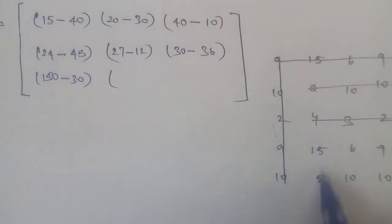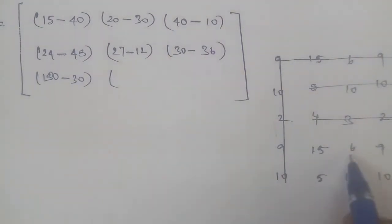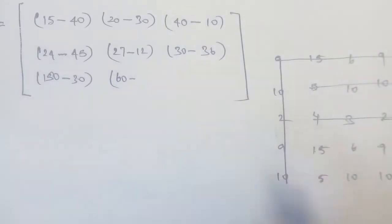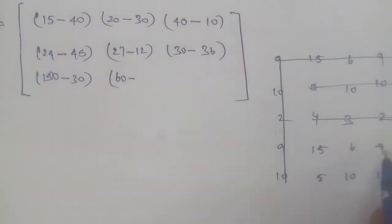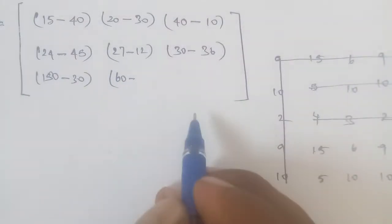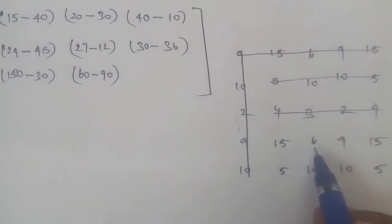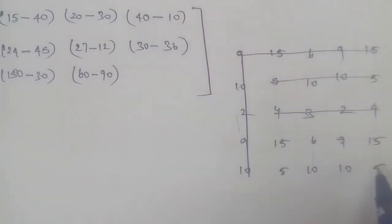Continuing the cofactor matrix: for element 6×10 = 60 minus 10×9 = 90, giving minus 30. For element 9×5 = 45 minus 10×15 = 150, giving minus 105. Then 120, 60 minus 90, that is minus 30. And 45 minus 150, that is minus 105. The adjoint matrix is now complete.